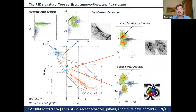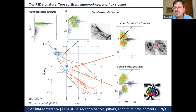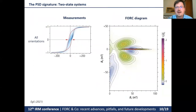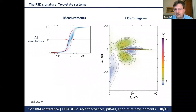Here is a summary of the signatures in the PSD range. We have true single vortex particles, but we also have many arrangements of single domain particles which produce virtually indistinguishable features — almost identical to those of single vortex particles. This is something to keep in mind when looking at natural materials. The question is: because we have drastically different systems giving the same FORC signature, what is this FORC signature really representing?